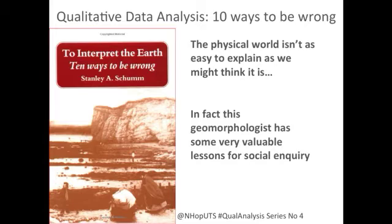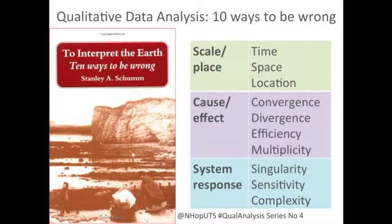What I'm trying to do is translate what he said is difficult about geomorphology — which is about explaining how landscapes form: mountains, cliffs, bays, volcanoes, that sort of thing — to the sort of work and challenges that we confront as social scientists dealing with social phenomena and qualitative data. He has three categories of ways to be wrong or difficulties: space and place, cause and effect, and system response. The language may not be exactly right for us as social scientists, but I'm going to stick with it and try to make the translation between his ideas and our context as social researchers.